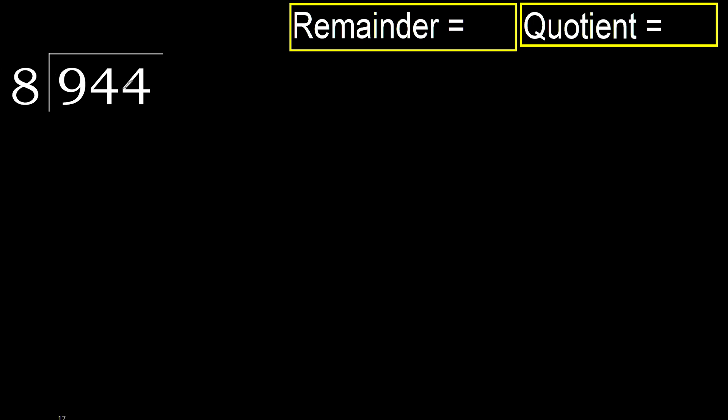944 divided by 8. 9 is not less, therefore we start with 9. 8 multiplied by which number is nearest to 9 but not greater? 8 multiplied by 2 is 16.